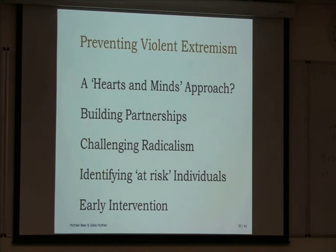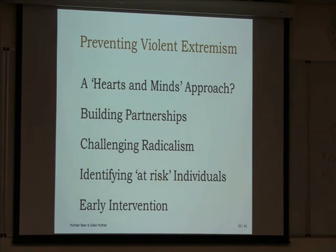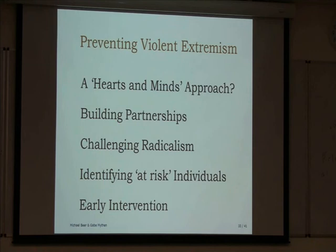How does that roll out in practice? The Preventing Violent Extremism agenda was first instigated by Tony Blair in 2007 — a massive multi-million pound program. It's a hearts-and-minds approach: the idea after 7/7 that we need to engage people not just by coercion but engage the ideas — counter the ideas that are driving people toward political violence. A lot of this was based on building partnerships, giving 50 million pounds to various local authorities with relatively high Muslim populations so they could challenge radicalism at the ground level.